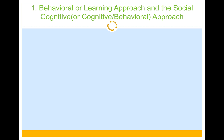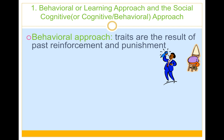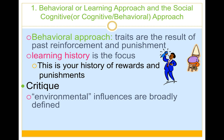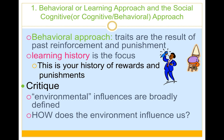Let's talk about some theories of personality, starting with the behavioral or learning approach. Behaviorists believe that you are a product of your past rewards and past punishments — learning history is the focus. A critique of the behavioral approach is that environmental punishments and rewards are often broadly defined, making it difficult to understand what made a person unique. Even siblings raised in very similar situations may have very different traits.